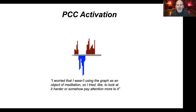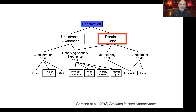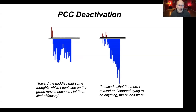In contrast, undistracted awareness — a lot of people reporting concentration, observing sensory experience, and also the category of not efforting — effortless doing, we called it — where people were reporting that they were content. This was associated with deactivating the posterior cingulate. For example, one person said, toward the middle I had some thoughts, which I don't see on the graph, maybe because I let them flow by. Another said, I noticed the more that I relaxed and stopped trying to do anything, the bluer it went.